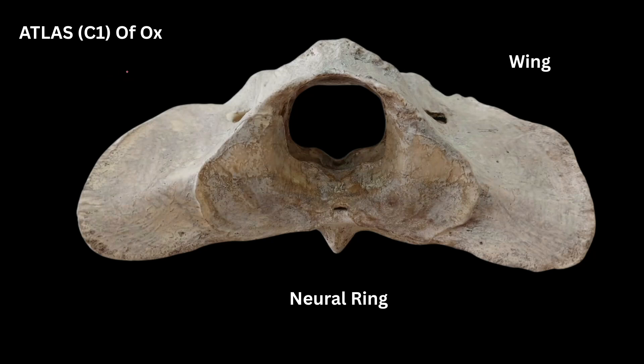Today we will discuss the atlas, or first cervical vertebra of the ox. Atlas is the name of the Greek mythological god who is holding the entire universe. Likewise, the atlas is holding the head in animals and human beings — that's why it is named the atlas.